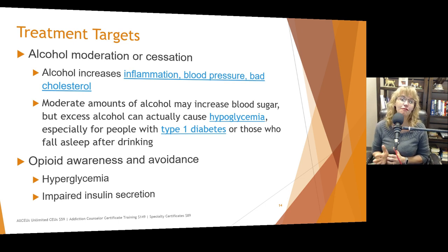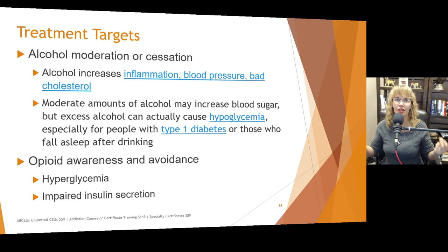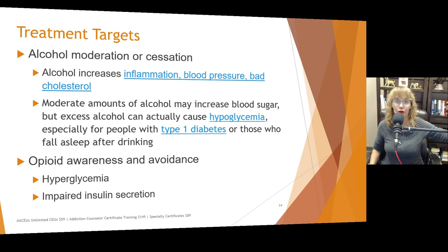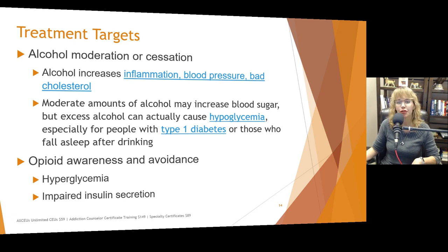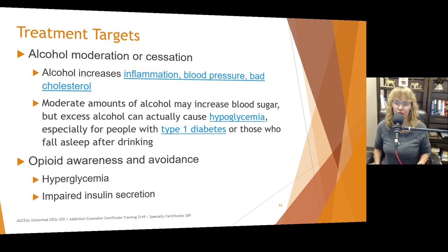Regarding opioid awareness and avoidance — not everybody can always avoid opioids, such as during surgery. However, opioids can contribute to high blood sugar, hyperglycemia, and impaired insulin secretion. If someone is on pain medications or opioids, it's really important to make sure they are monitoring their blood sugar and ideally looking for alternatives.